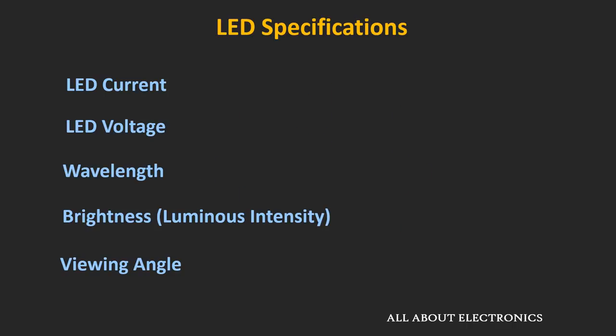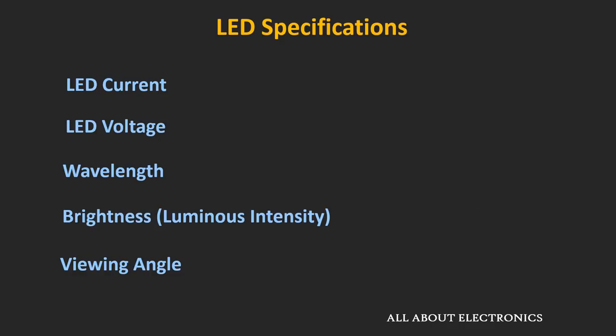So here is the list of different specifications of the LED which you will find in the datasheets. We have already talked about the first three specifications — that is LED current, the forward voltage drop of the LED, and the wavelength of the LED. Now the brightness or the luminous intensity is usually defined for the LED at a specific current, and this brightness is defined in the unit of millicandela. So while selecting the LED for a specific application, one should also consider this specification.